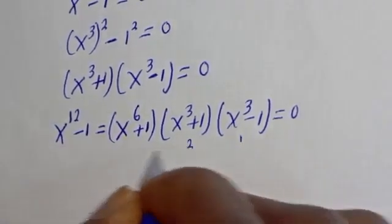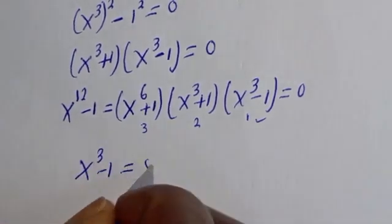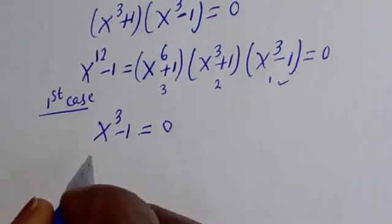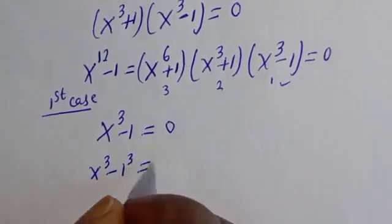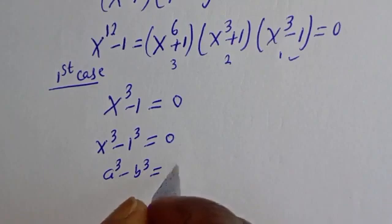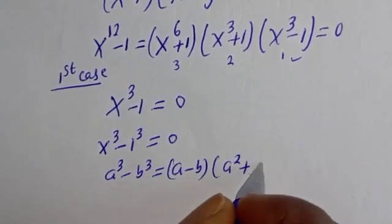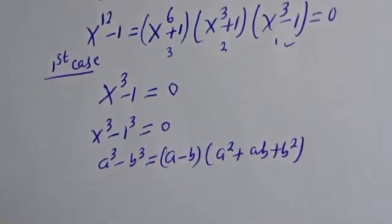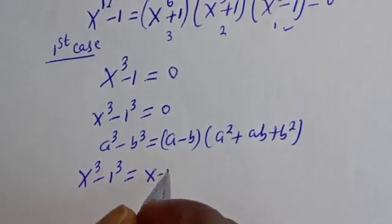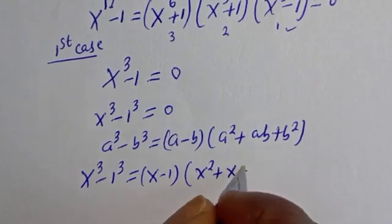Case 1: s raised to power 3 minus 1 is equal to 0. This is the same as s cubed minus 1 cubed is equal to 0. Using the factoring identity a cubed minus b cubed equals (a - b)(a squared + ab + b squared), this becomes (s - 1)(s squared + s + 1) is equal to 0.